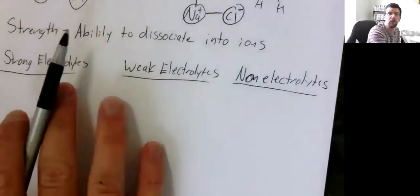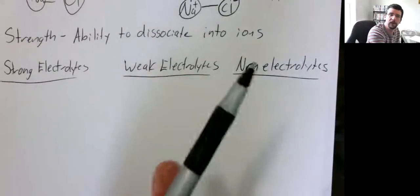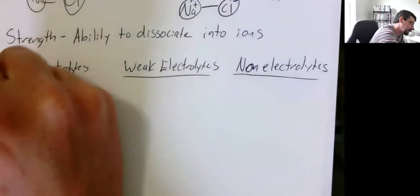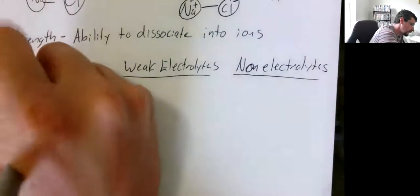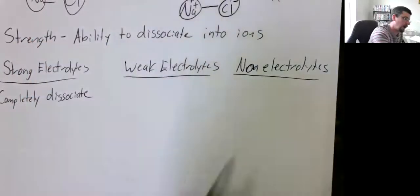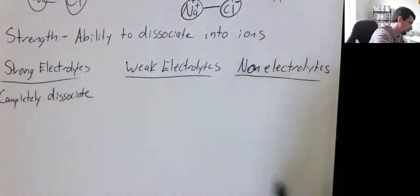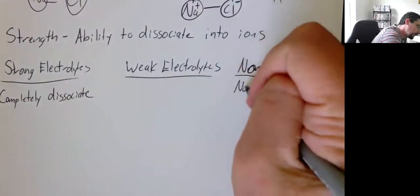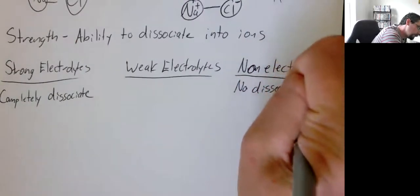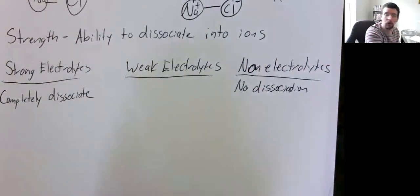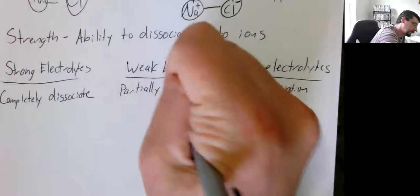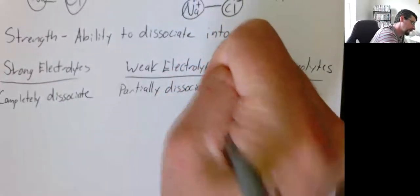As we discussed, when we're talking about strength, we're talking about the ability to dissociate into ions. A strong electrolyte would completely dissociate, whereas a non-electrolyte would not dissociate. Weak electrolytes partially break apart, so they partially dissociate.